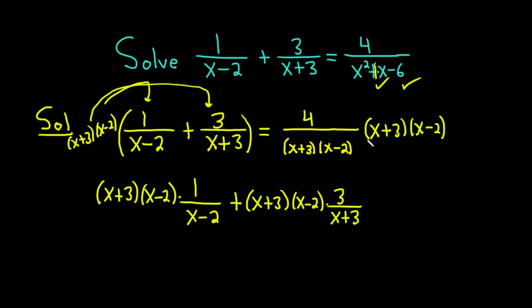On the right hand side it's pretty easy. You can think of this as a number over 1. And so the x plus 3's cancel, and so do the x minus 2's. So it becomes 4, which is really wonderful.